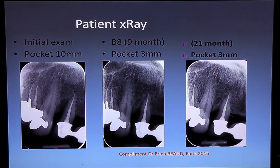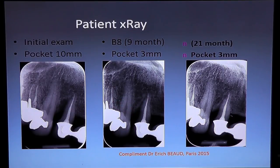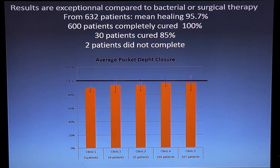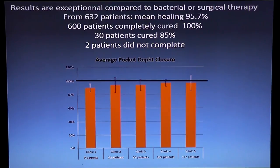In another case, you see the initial examination showing vertical bone loss and a 10 millimeter deep pocket. At nine months within treatment you see how the bone fills in. This is the same patient at 21 months — 12 months after the end of treatment — see how the bone goes back in place just by itself. It will resolve by itself.